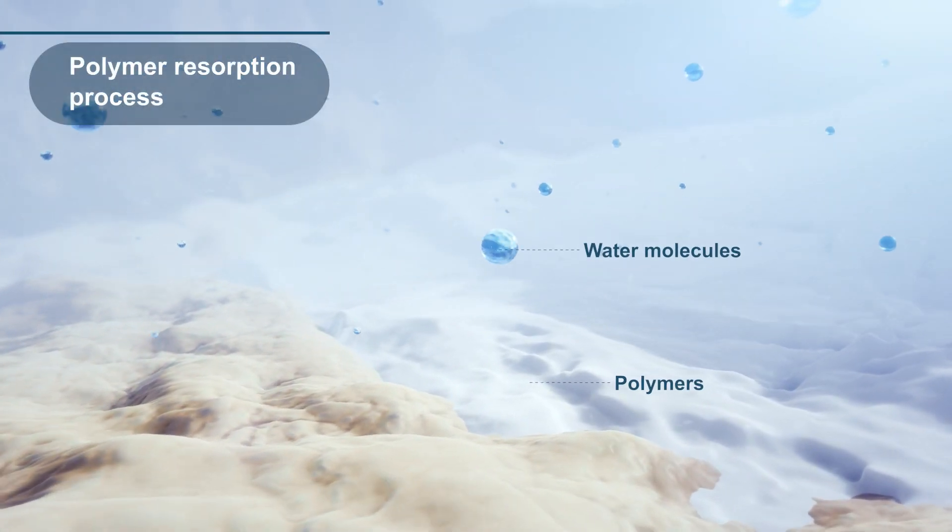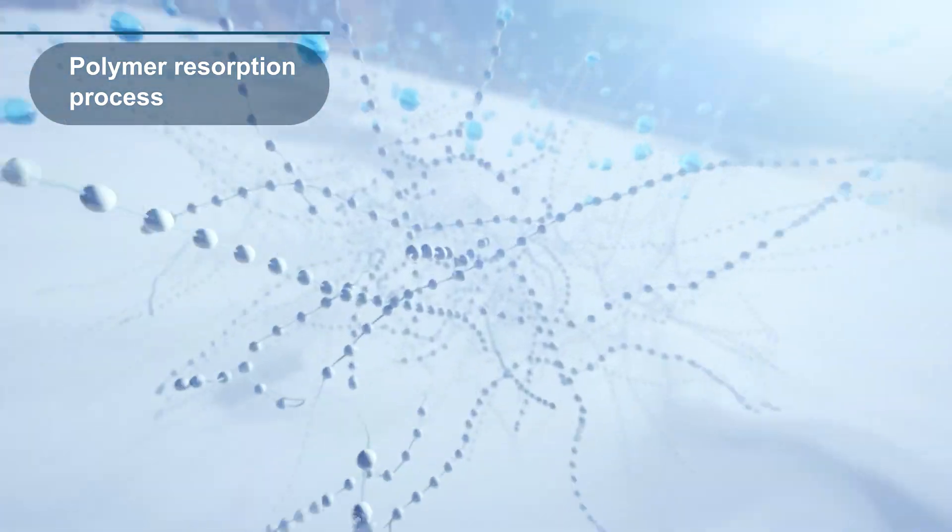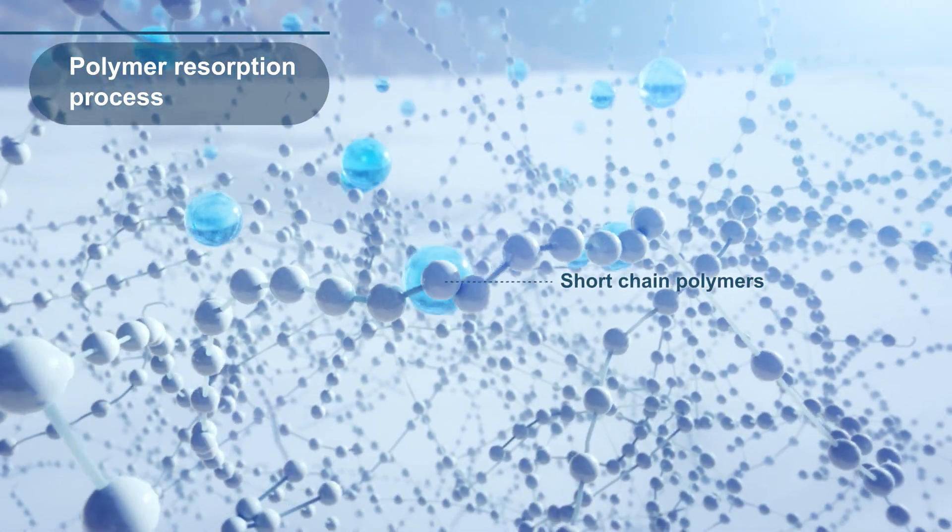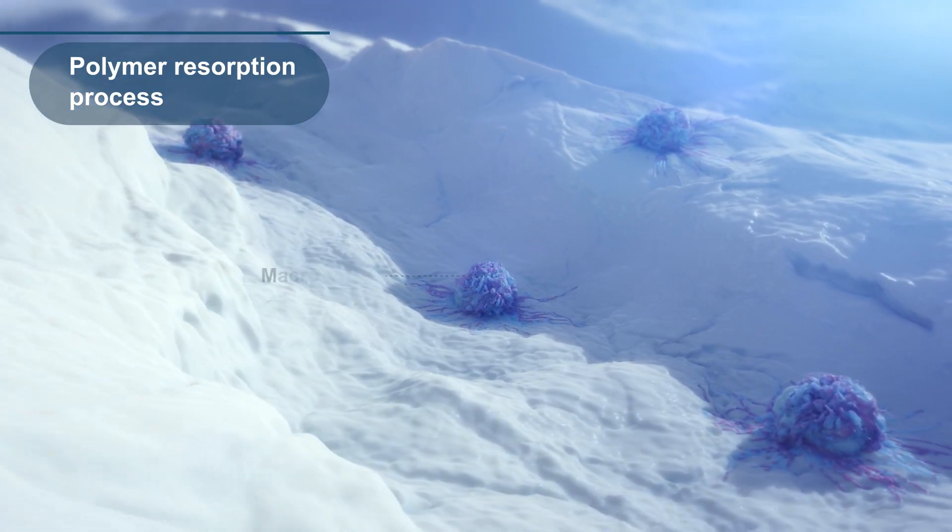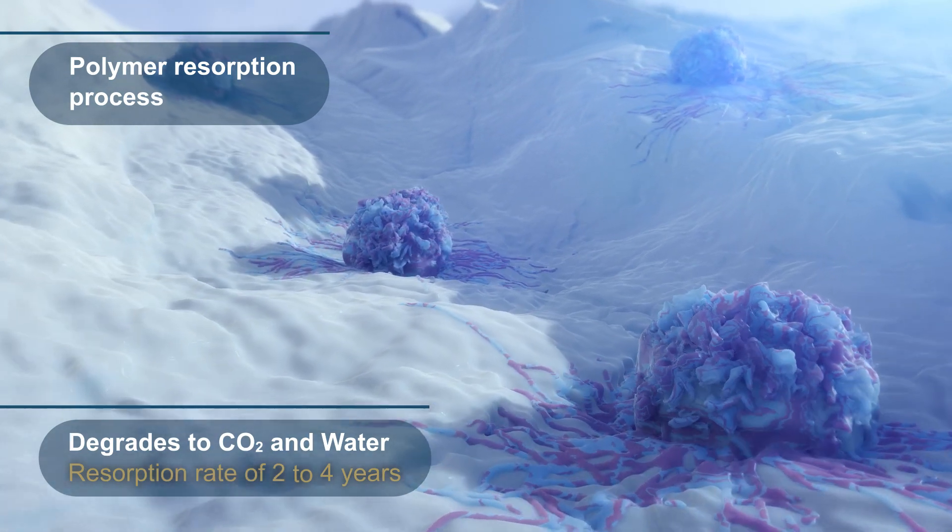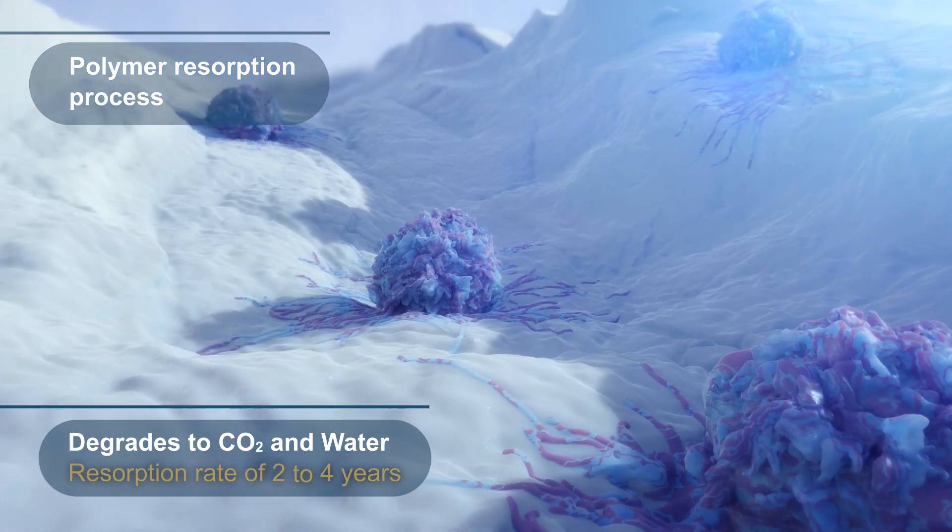The graft cage is resorbed in a two-step process. Initially, bulk degradation occurs by hydrolysis, reducing the molecular weight of the cage. Next, macrophages metabolize the short polymer chains in a process called phagocytosis, with CO2 and water as byproducts.